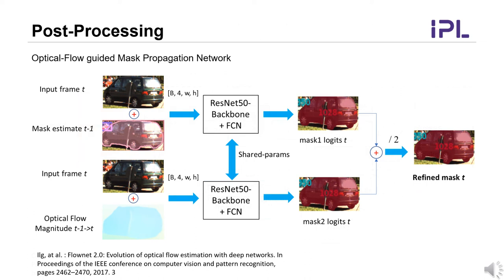We further improve the mask quality of tracked objects in videos by using temporal information, where the segmentation mask can be further refined from the previous frame's rough estimate. We also employ optical flow as a source of additional information to guide the segmentation. In parallel, we compute a second output mask using the magnitude of the optical flow field as the input image, then fuse by averaging the two network results to generate the final output masks.